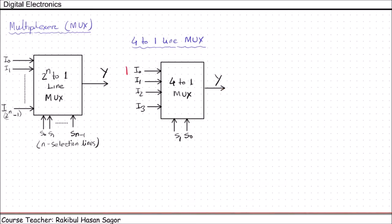Suppose we have the input 1011. Now if we provide 01 here, the value of I1 will be available at the output. If we provide 10 here, the value of I2 will be available at the Y output.